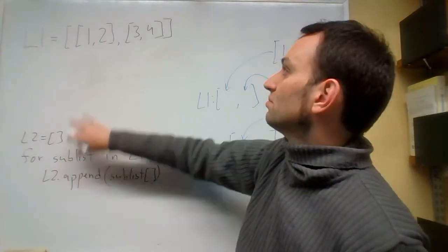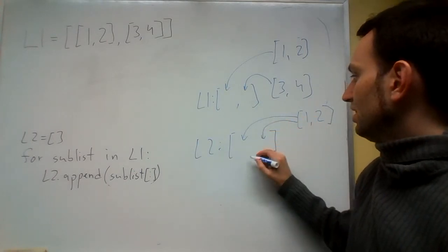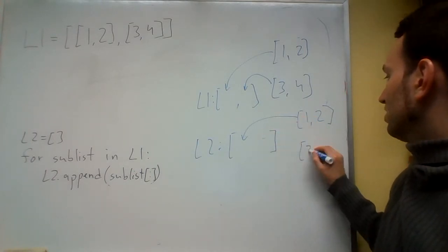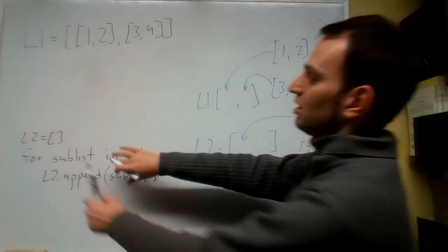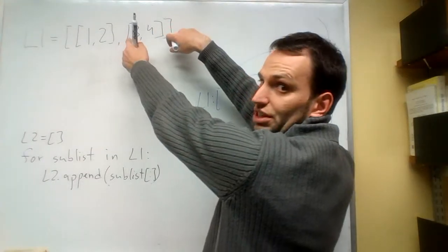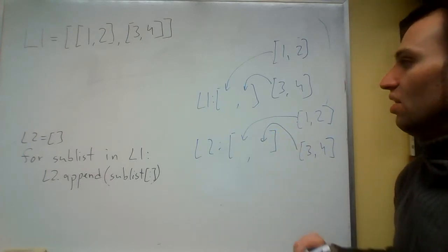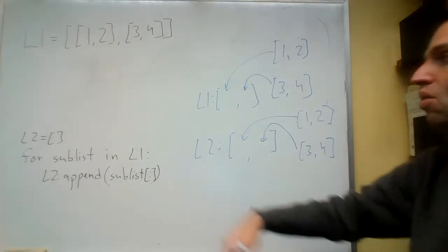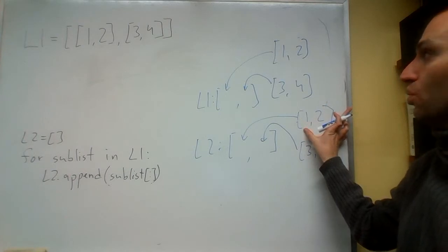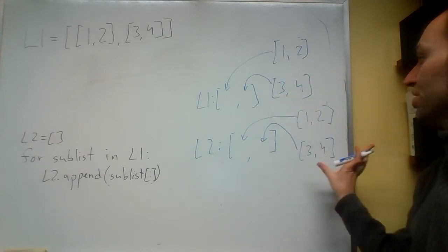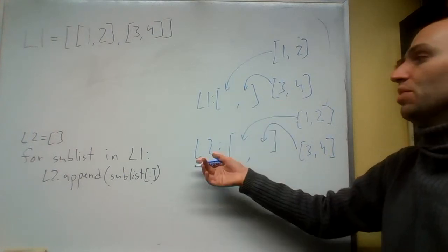Next, sublist is 3, 4. When we append it, we create a copy of 3, 4 and append it to L2. So L1 and L2 are now completely independent — this is one copy of 1, 2 and this is another copy of 1, 2; this is one copy of 3, 4 and this is another copy of 3, 4. Modifying L1 at 0 at 1 will not affect, for example, L2 at 0 at 1.